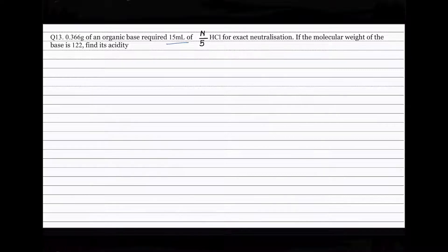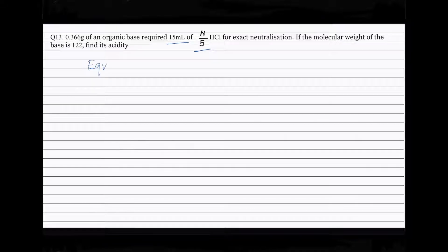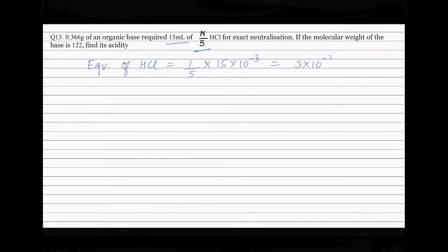Volume of HCl is 15 ml. Normality of HCl is N by 5, or 1 by 5 N. Therefore, equivalents of HCl will be equal to normality, that is 1 by 5, into volume in liters, that is 15 into 10 to the power minus 3. This is equal to 3 into 10 to the power minus 3. The organic base is neutralized by HCl.